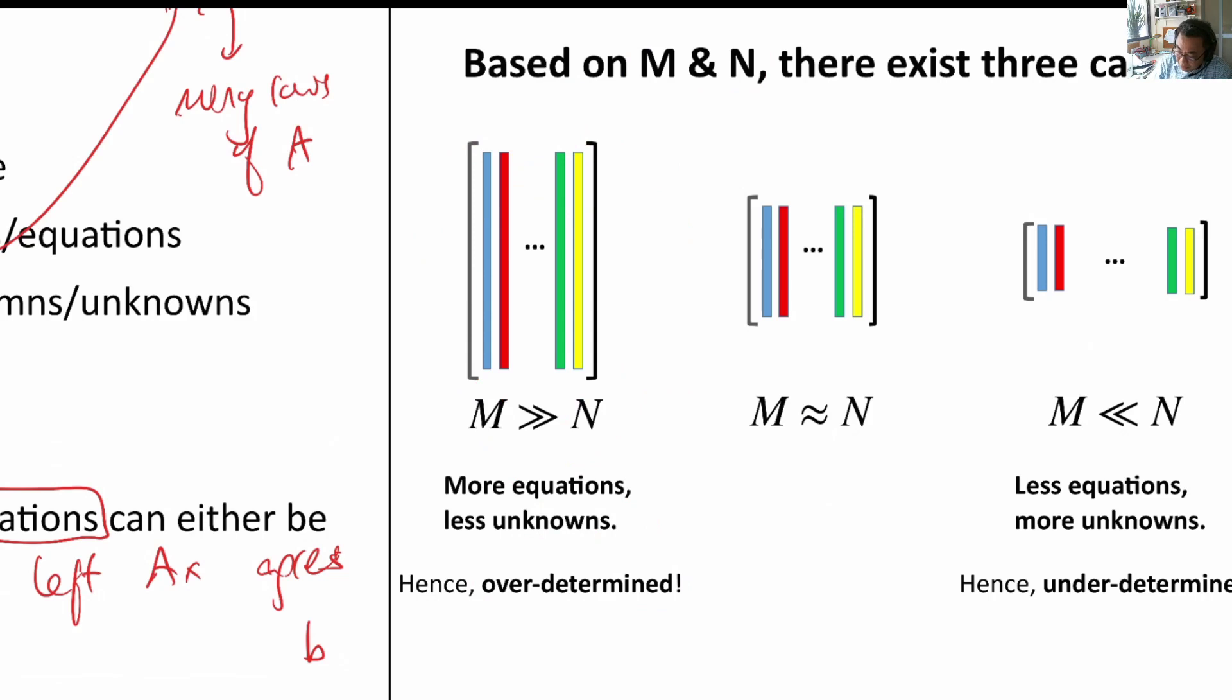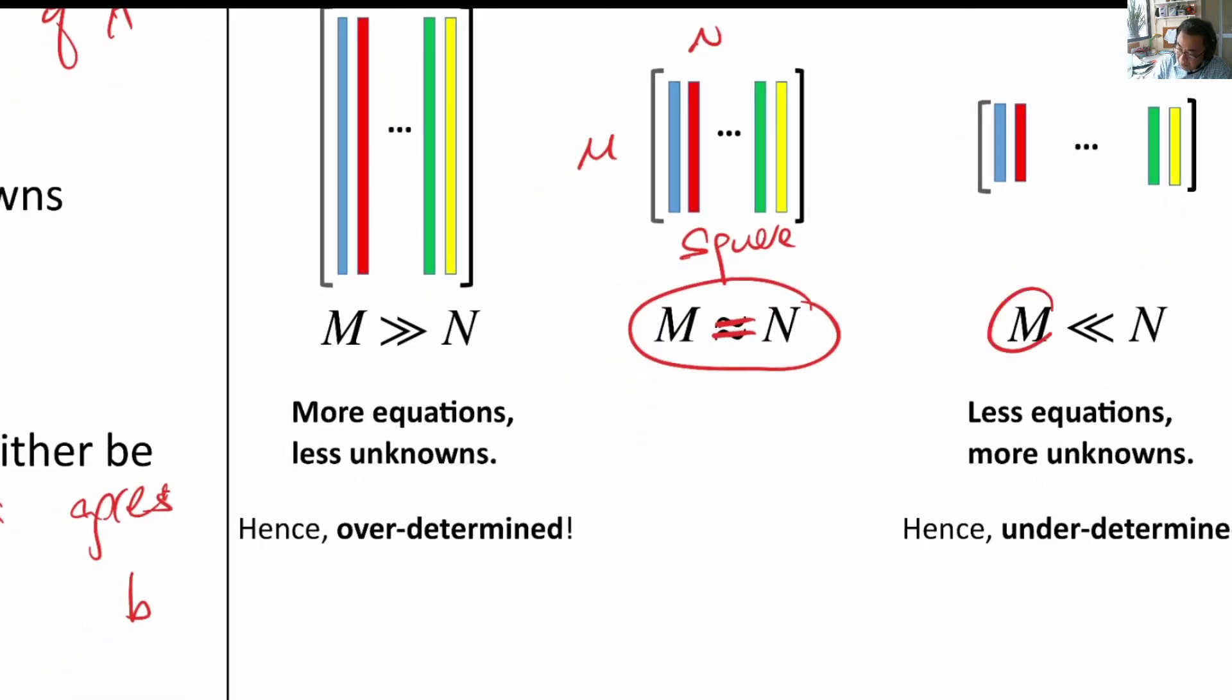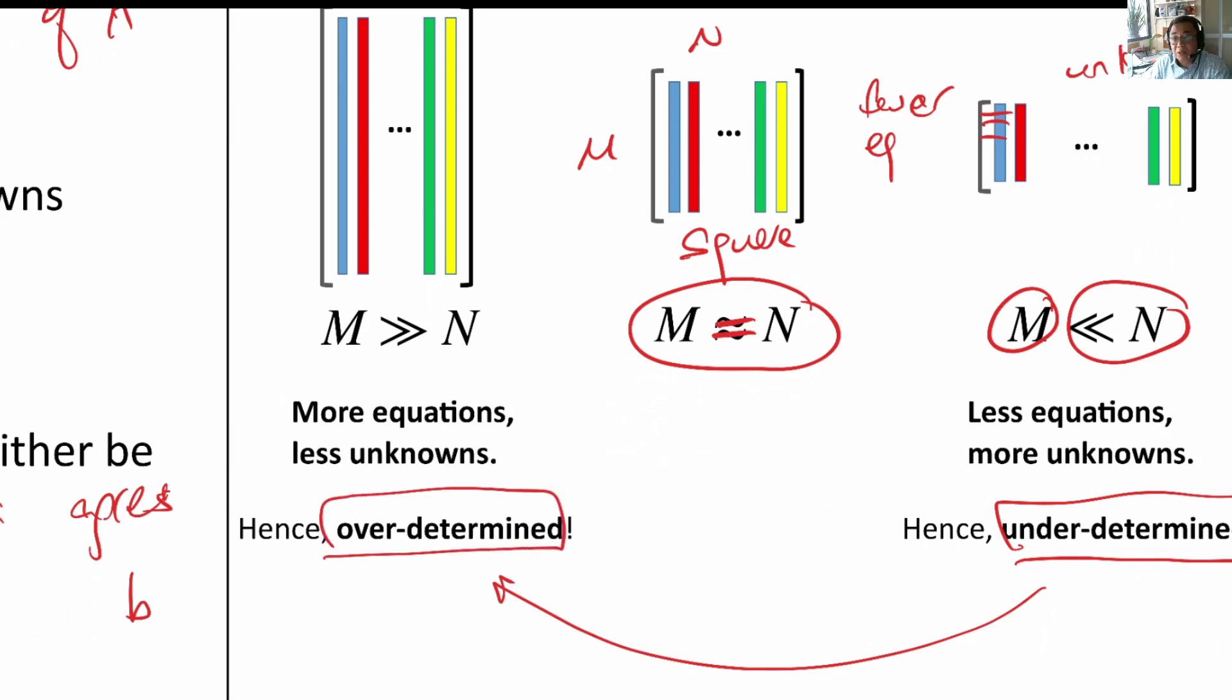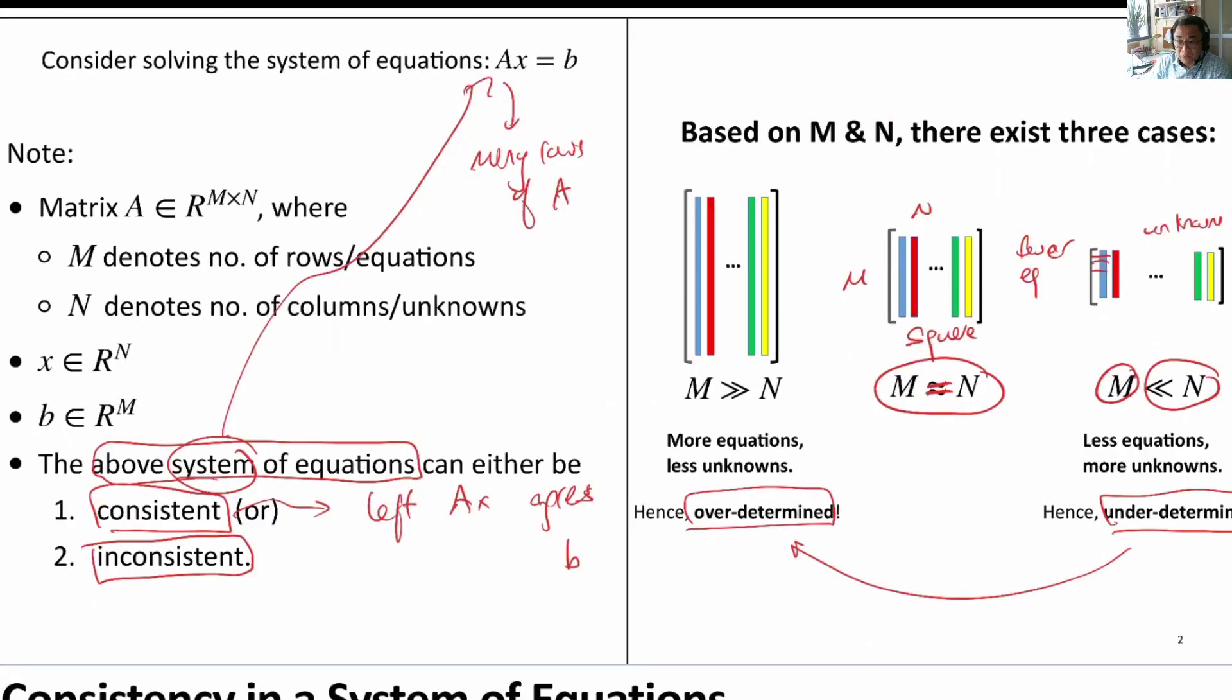Now, when M equals N, then actually M, N, this is a square matrix. And when M is less than N, where there are only fewer equations, fewer equations than unknowns, we have more unknowns, then the system is under-determined. So, this is over-determined on the left and under-determined on the right. With this background, we can talk about consistency.